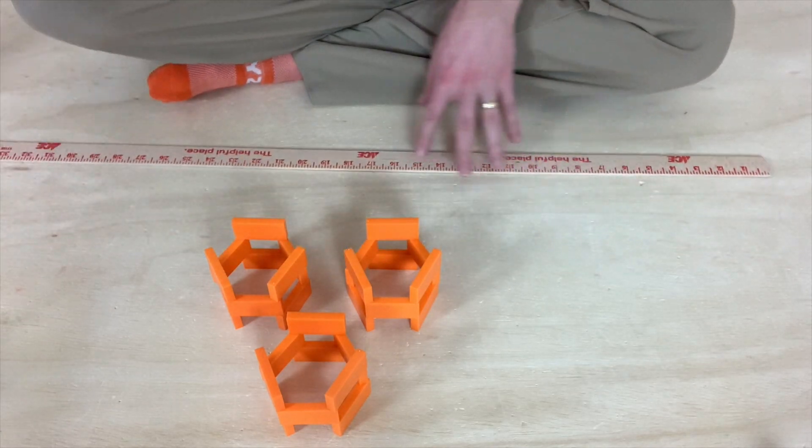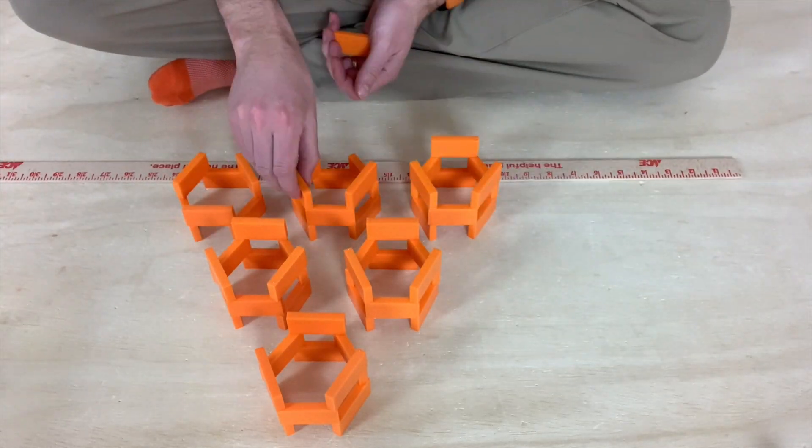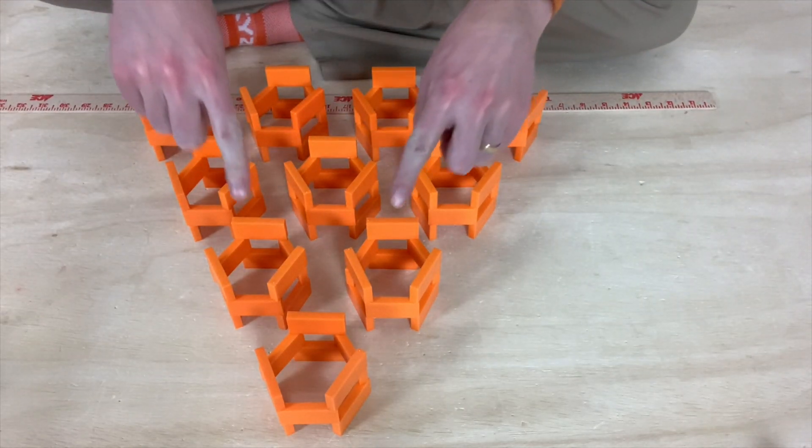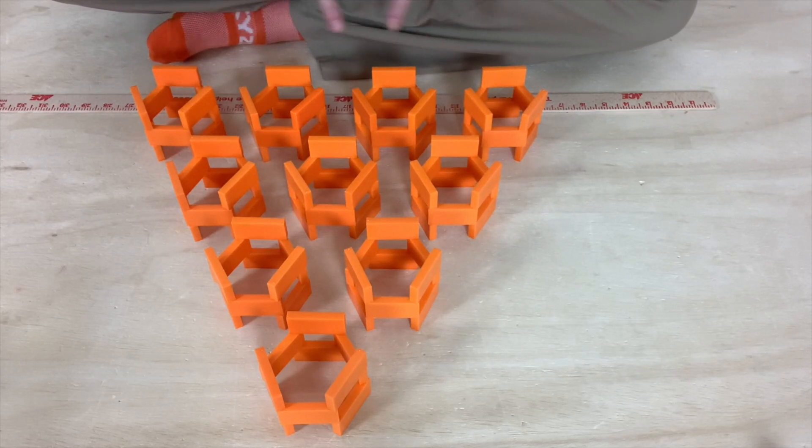So now we've built a triangle of 10 hexagon towers that are three levels high, and the next phase is to connect these hexagons with another layer of hexagons above.